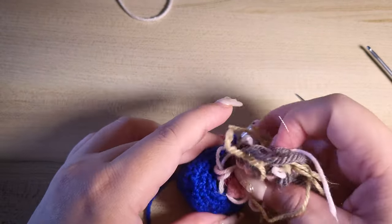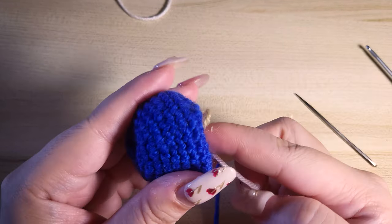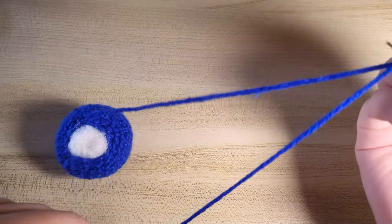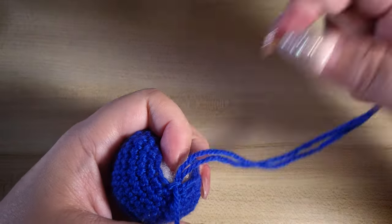Start stuffing with fiber fill. I'm actually going to use my leftover yarn as stuffings as well. Now weave through the front loop stitch only again.